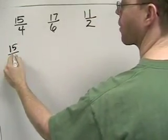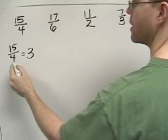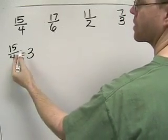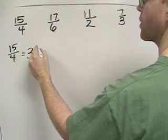So 15 fourths becomes 3. 4 times 3 is 12, plus 3 is 15, so 3 and 3 fourths.